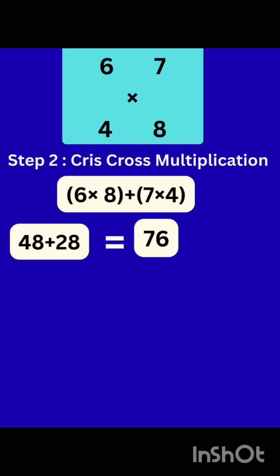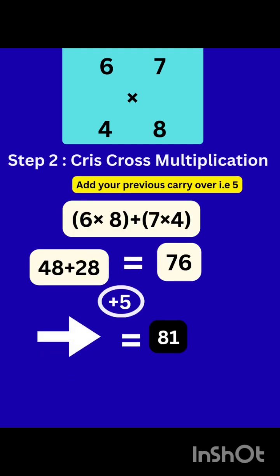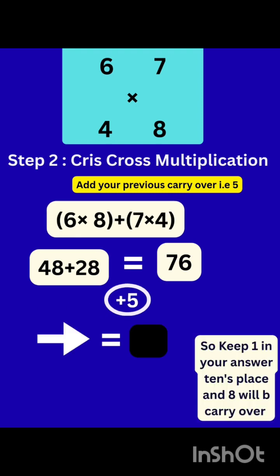Now there was 5 as carry over from our step 1. So add them to your cross multiplication answer. That will be 76 plus 5, that is equal to 81.